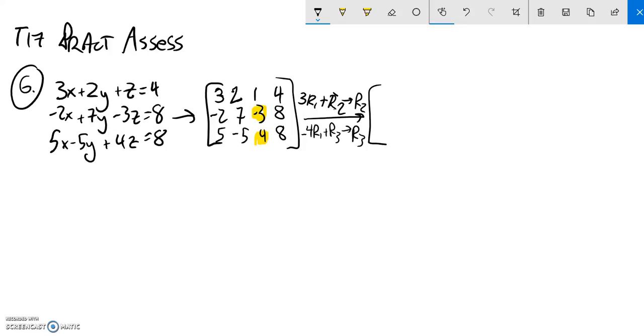I can do my arithmetic. 3 times the first row plus the second row is going into the second row, so 3 times 3 is 9, 9 plus negative 2 is 7. Let me write that first row because it's just going to stay as it was. 3 times 2 is 6, 6 plus 7 is 13. 3 times 1 is 3, plus 3 is 0—should have known that was going to happen because I wanted it to. 3 times 4 is 12, 12 plus 8 is 20.